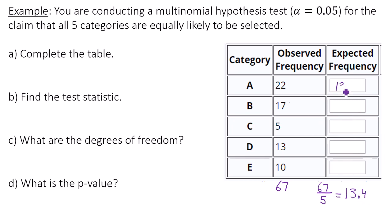So 13.4 would be your expected frequency for all the categories. Once again, that's because it said in the question that the claim was that all five categories are equally likely to be selected, so they're all equal.